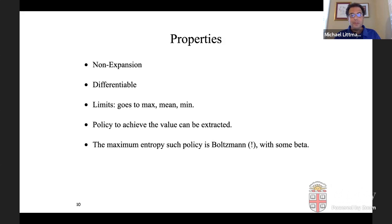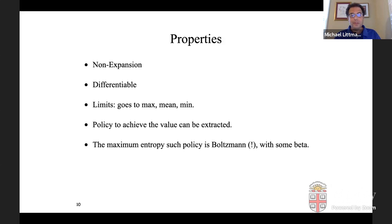So the properties that we have of this Mellowmax operator is that it is a non-expansion. Unlike the Boltzmann case, the Boltzmann averager, we have this non-expansion property. It acts like Boltzmann, but it's actually sort of friendlier. It's unlike the epsilon greedy, it's differentiable. Like I said, in the limit, as you play with this beta parameter, it can be max min or mean. You can extract a policy from it, right? So even though it's just a way of summarizing values, you can use that to assign probabilities to the actions that would achieve that value.